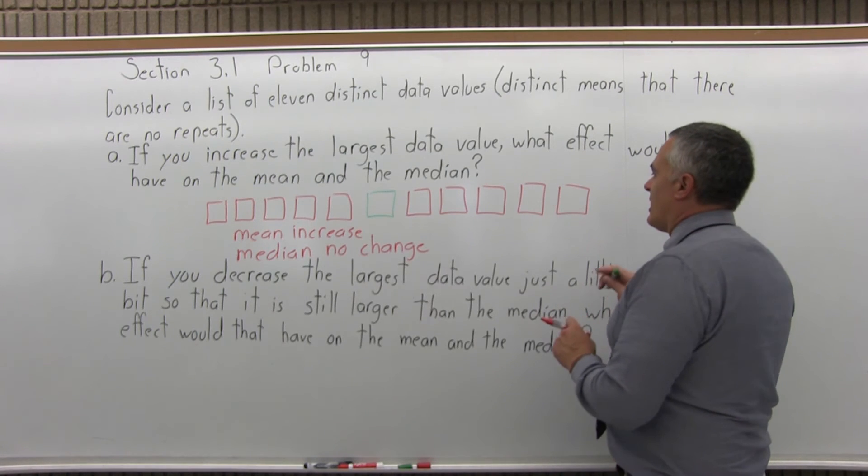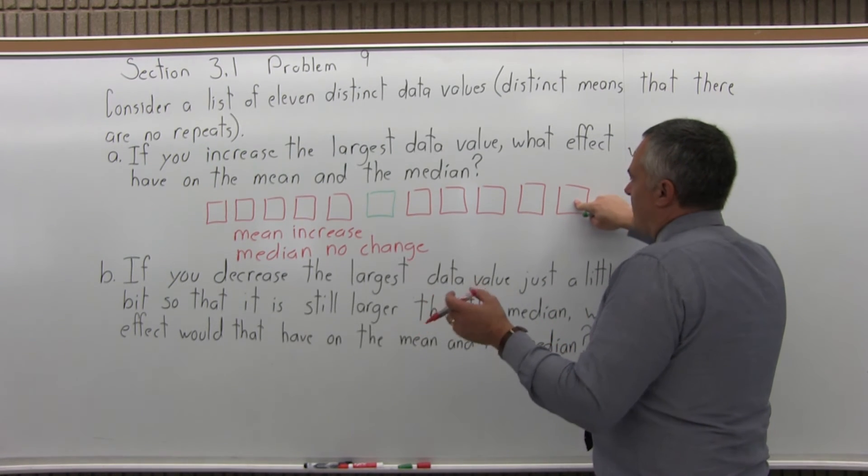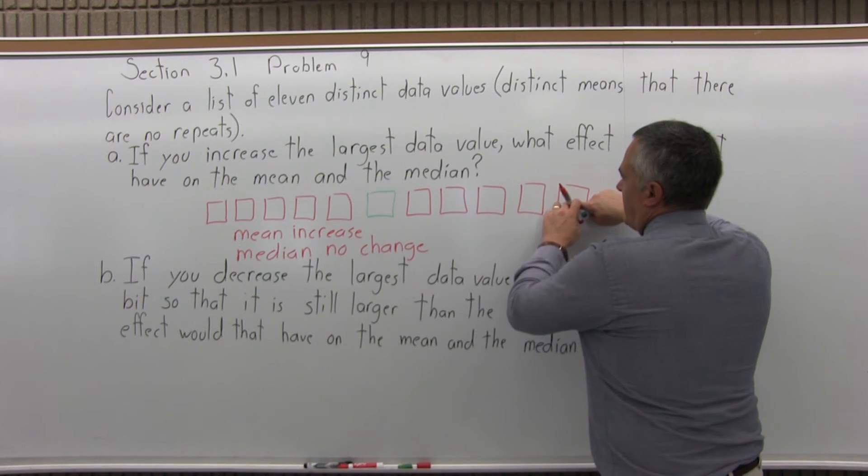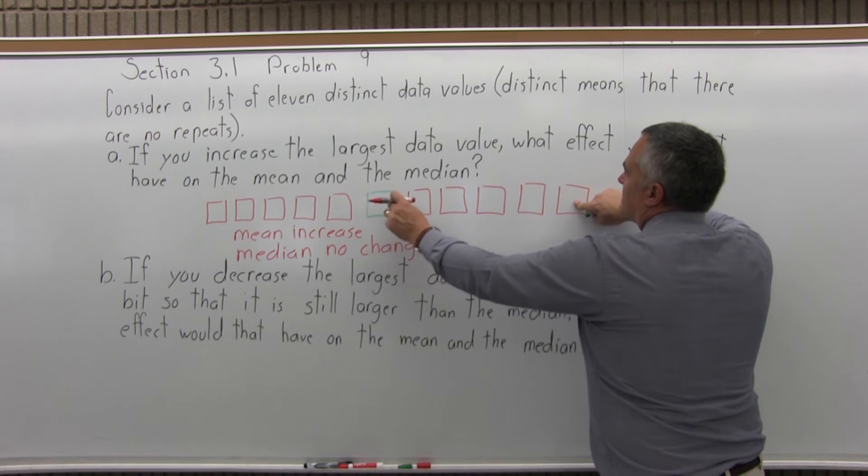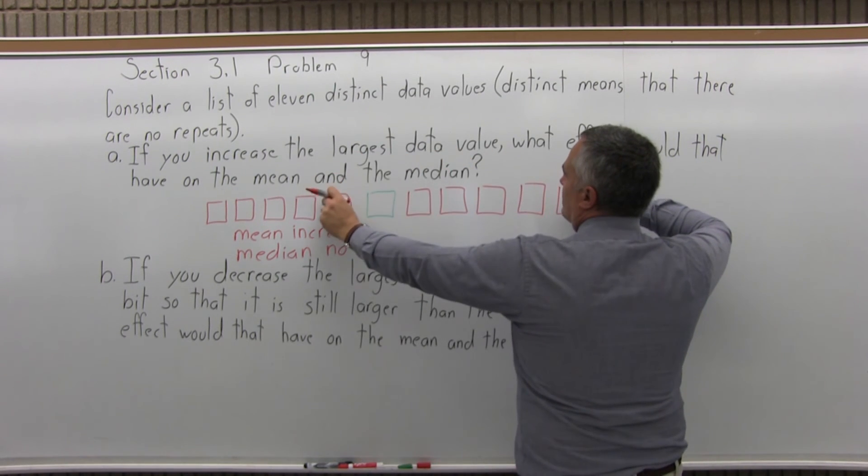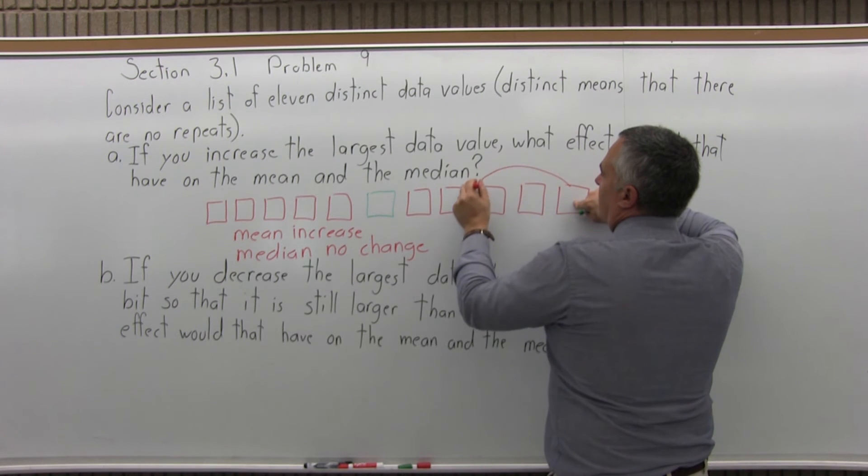Let's say we take the largest data value, which in my graph here is the one on the far right, and we decrease it a little bit, but it's still bigger than the median. We don't decrease it so much that it gets in front of the median, it still stays after.